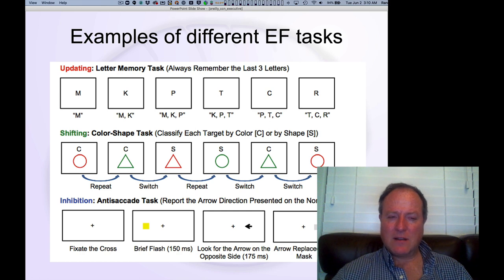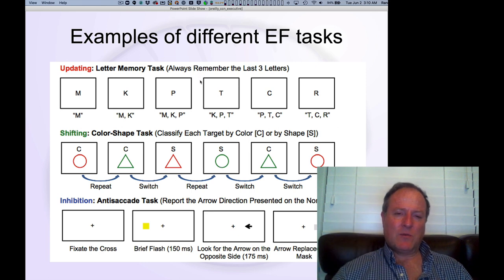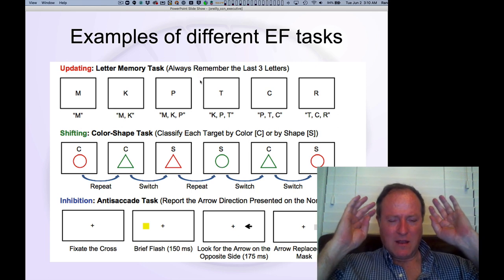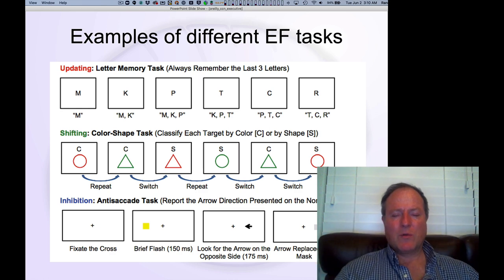It's interesting, updating and shifting kind of seem like the same thing, but the shifting tasks actually have different sources of individual difference variance. They're more about the task set driving and controlling posterior cortex, whereas updating is more purely within the working memory system. They tend to be more challenging, with more items that you're having to juggle.